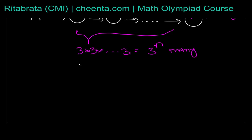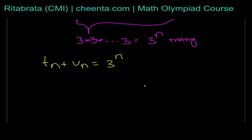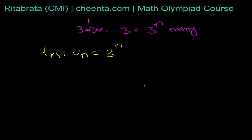This gives us the important relation: t_n plus u_n equals 3^n. Now for the recurrence, we need to relate n cases to n minus 1 cases — relating t_n to t_{n-1} or u_{n-1}.